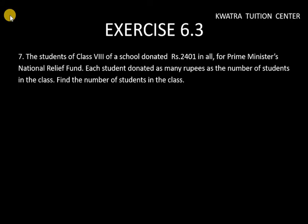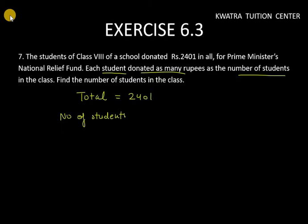So first of all, the information given here is how much amount they have donated — total donation was ₹2,401. The other information given is: each student donated as many rupees as the number of students. Let the number of students be x. And the number of rupees donated by each student will also be x.